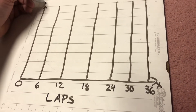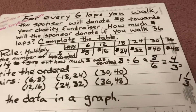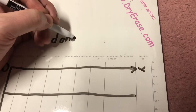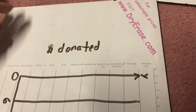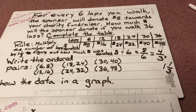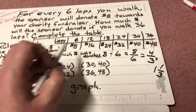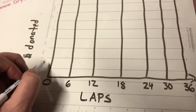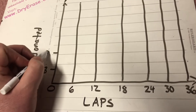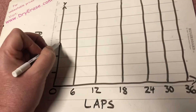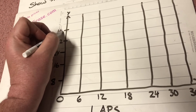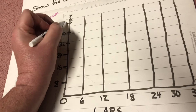My y-coordinate is going to be the money donated, so I label that axis 'money.' It goes in increments of eight — that doesn't change: eight, sixteen, twenty-four, thirty-two, forty, forty-eight. So starting from zero: zero, eight, sixteen, twenty-four, thirty-two, forty, forty-eight.